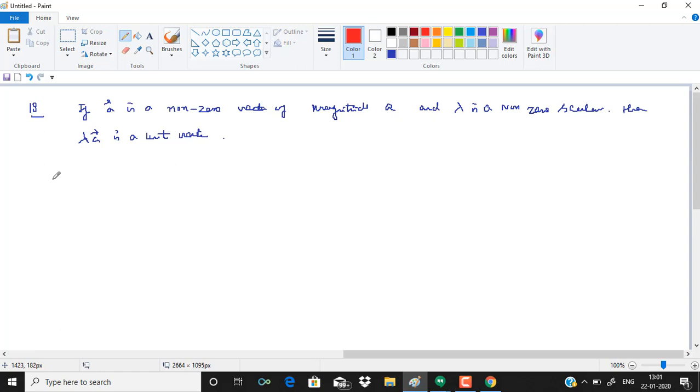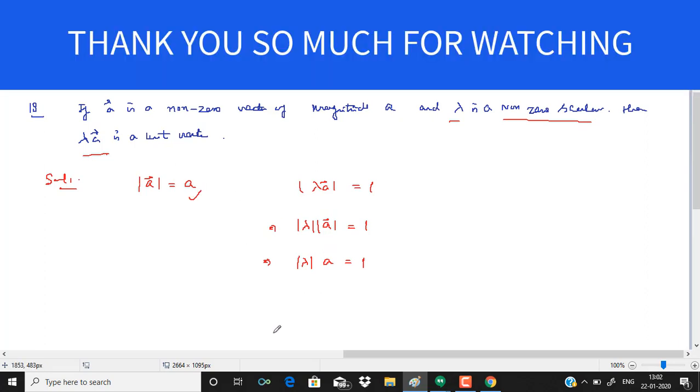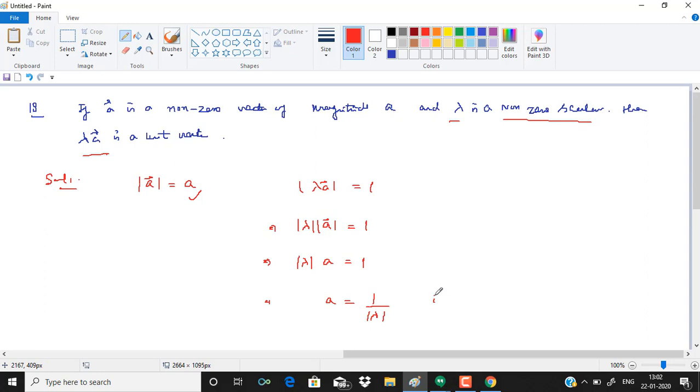In question number 18, we are given that a is a non-zero vector of magnitude a, and lambda is a non-zero scalar. The answer is a equals a upon lambda, which is option d.